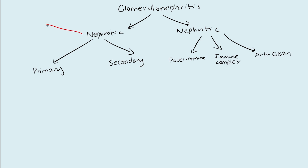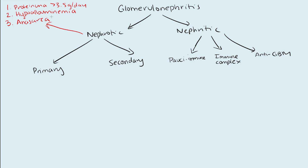Going back to the diagnostic criteria for nephrotic syndrome: you're going to need to see proteinuria greater than 3.5 grams per day, hypoalbuminemia, and you will also need to see anasarca — diffuse generalized body swelling.